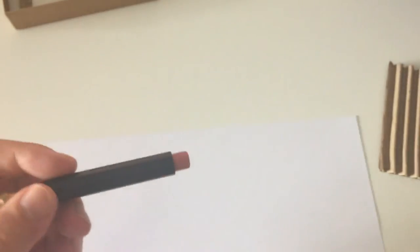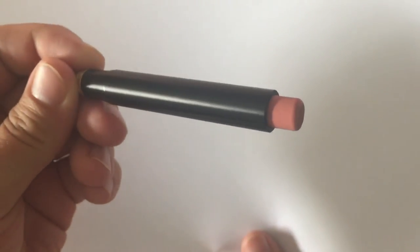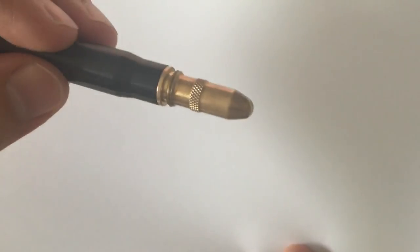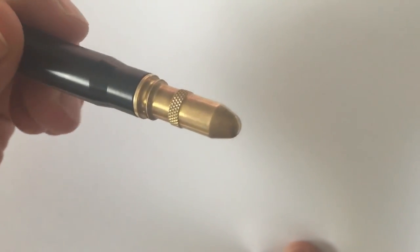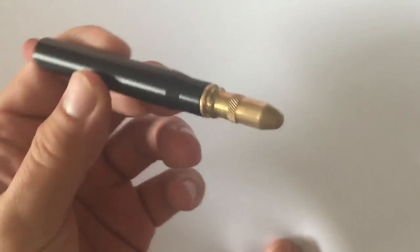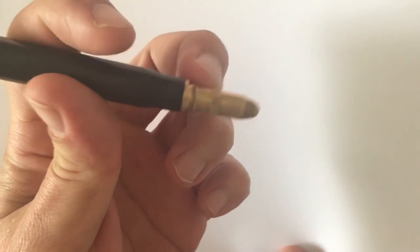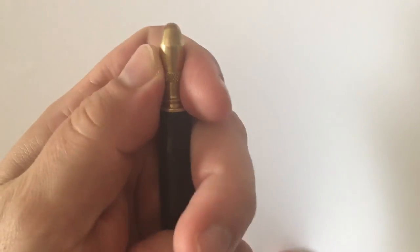The bullet pencil body itself is this nice black aluminum which is pretty lightweight. At the front you have this brass bullet which is knurled, and this knurling helps you to very easily unscrew the bullet.